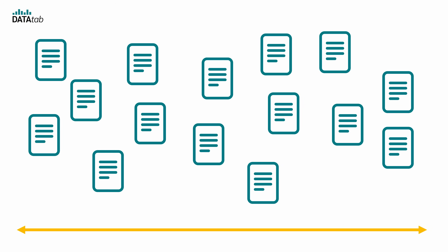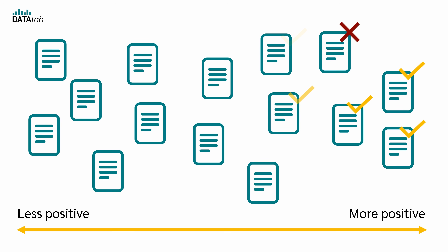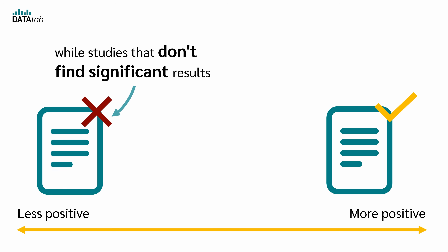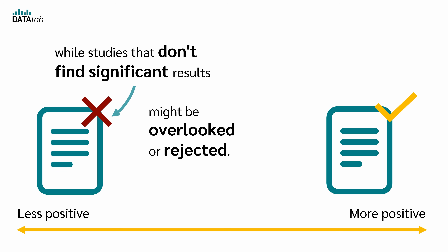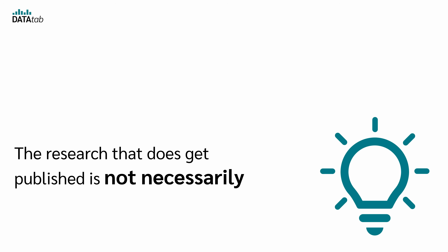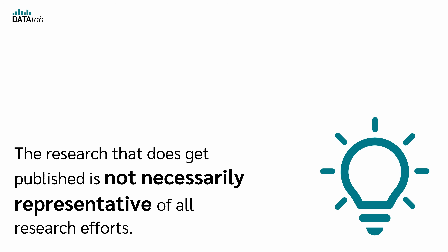One reason for this is the preference for positive results. Journals and researchers often prefer studies that show significant or positive results. If we line up research from less positive to more positive results, more studies would be published on the positive end. Studies confirming a hypothesis or showing a clear effect are more likely to be published, while studies that don't find significant results might be overlooked or rejected. Therefore, the research that does get published is not necessarily representative of all research efforts.